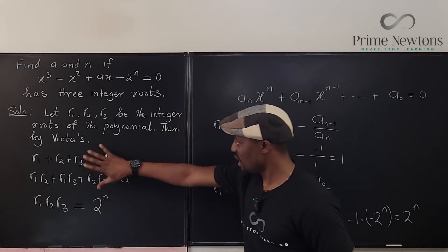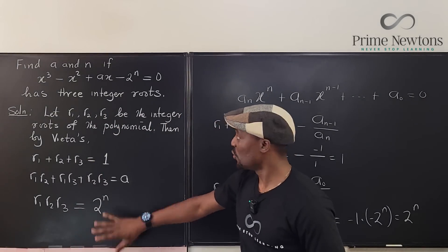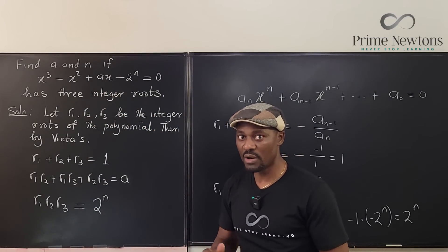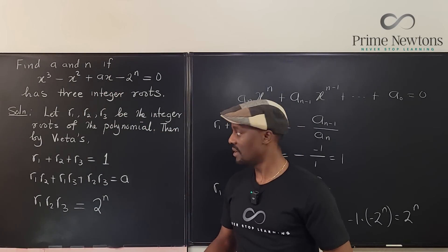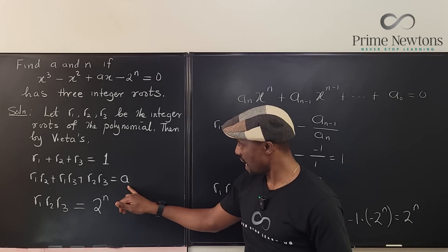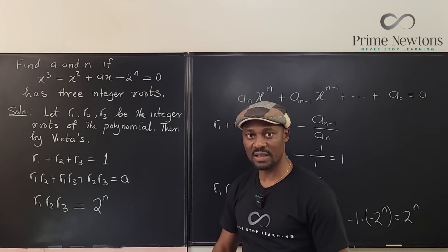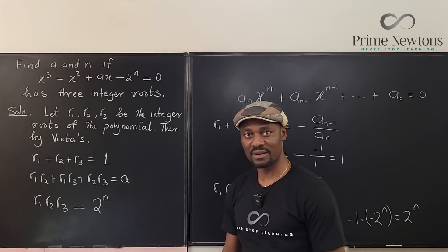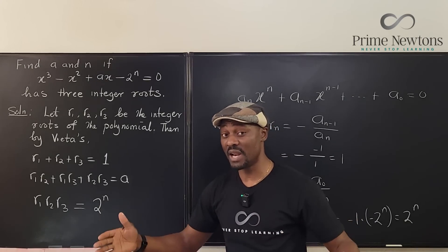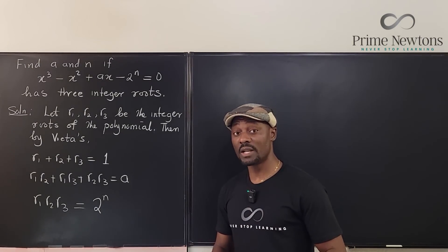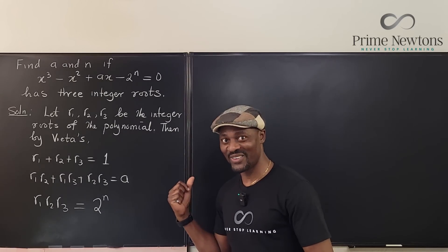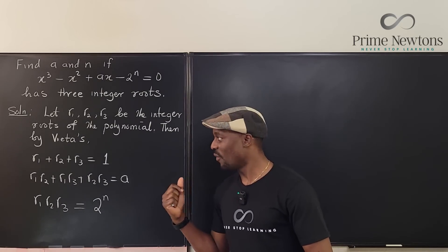These are the three equations we need to solve this problem. If we can find what r1, r2, r3 could be, then we can find both a and n, since the product is 2^n. This is filled with logical reasoning and elimination from this point on — I'm going to talk a lot and write less because I need space.